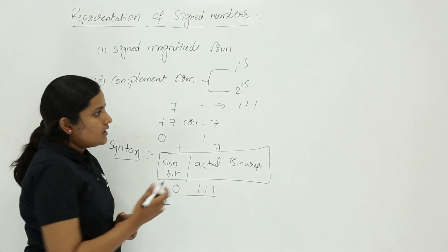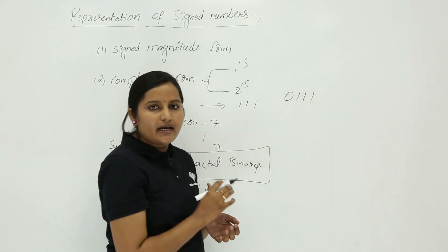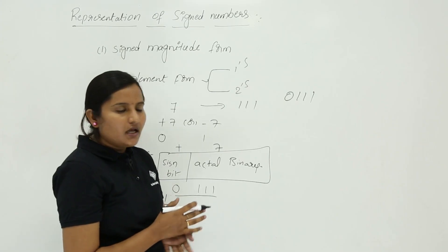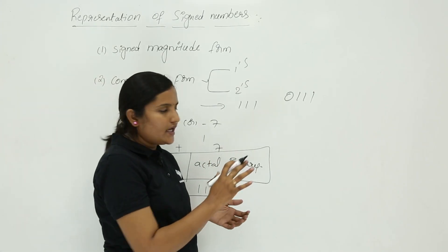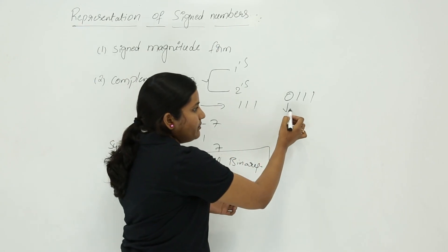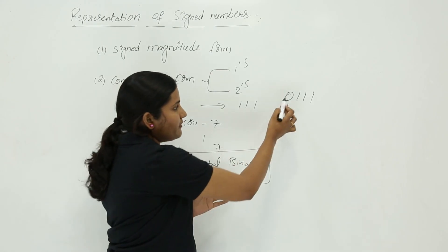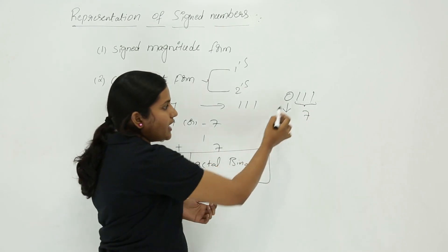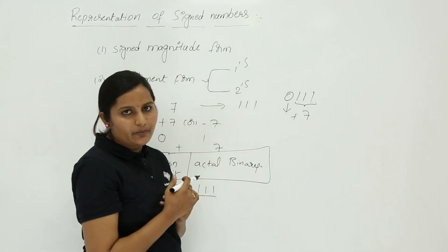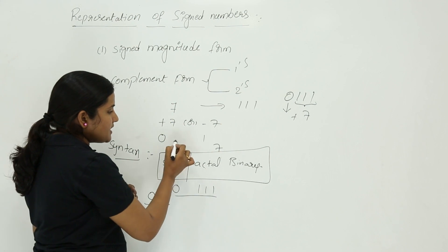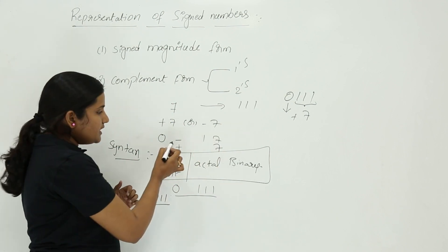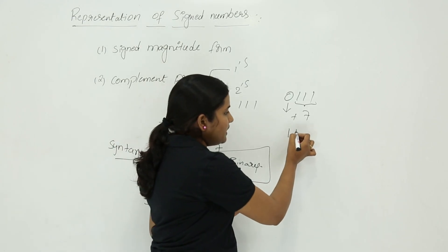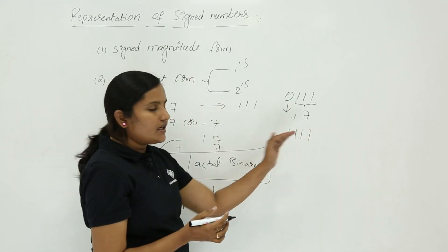If someone gives you 0111 and says it is represented in signed magnitude form, you must read it carefully. The first bit is the sign bit and the remaining bits are the actual binary. The remaining 111 decodes as 7, and since the sign bit is 0, the answer is plus 7. For minus 7 in signed magnitude form, the sign bit is 1 and the actual binary is 111, giving four ones.